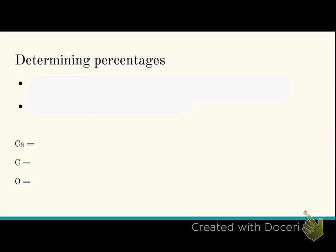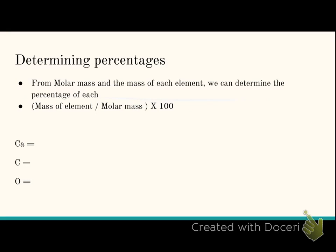So when we are determining percentages, from our molar mass and the mass that we have of each element, we can determine the percentage that we have of each element. The formula or the equation that you're going to use is you're going to take the mass of each element and you're going to divide it by the molar mass. Then to make something a percentage, that's when we multiply by 100.